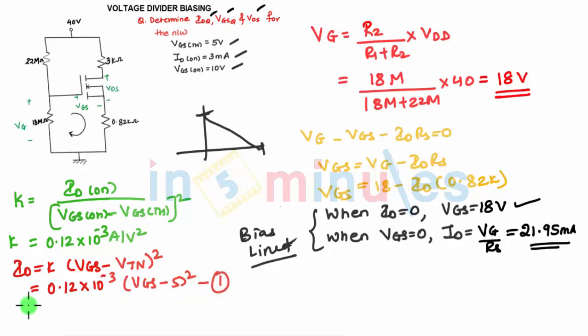So in equation one, you can substitute various values of VGS, say 15, 10 and 20. For these values, you can find the value of ID. So you get three values of ID.